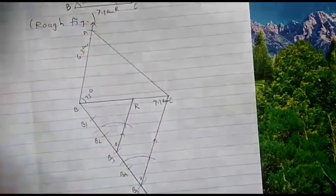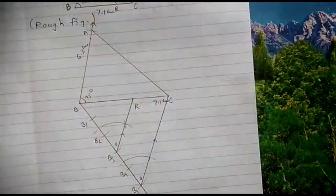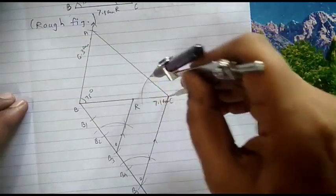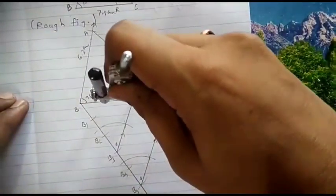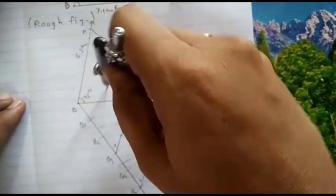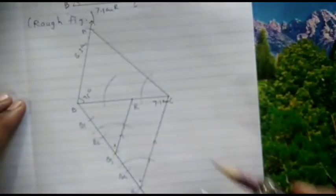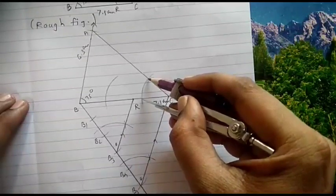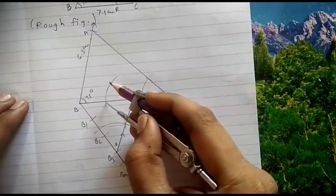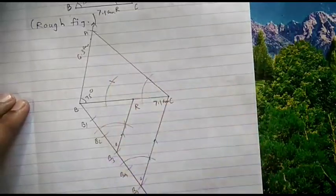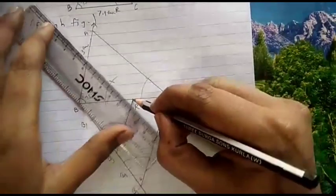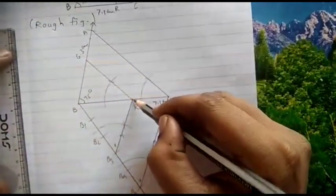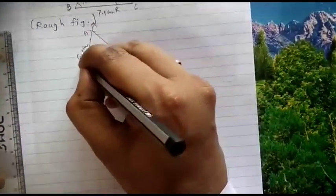Through point R, draw a line parallel to AC. Keep a steel point on the angle, draw an intersecting arc. Then keep the steel point on point R and draw an arc with the same radius. Take the distance between the two arms, draw the intersecting arc, and join this point of intersection with R. This line is parallel to AC as the corresponding angles are congruent. This is triangle ABC, and the construction is complete.